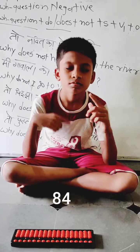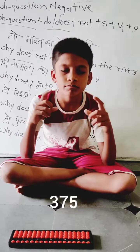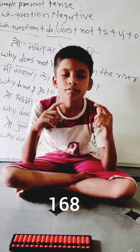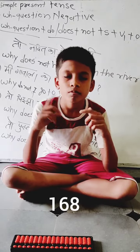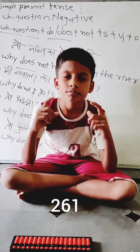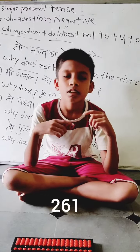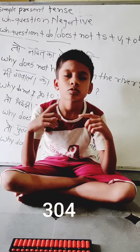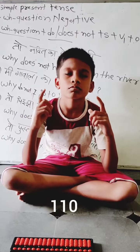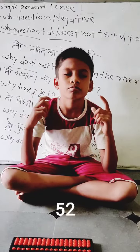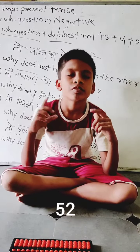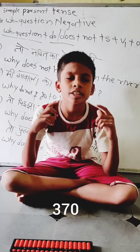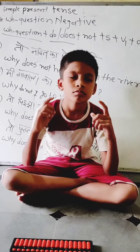21 x 4 = 84. 84 x 2 = 168. 87 x 3 = 261. Correct. 76 x 4 = 304. Correct. 22 x 5 = 110. Correct. 26 x 2 = 52. Correct. 74 x 5 = 370. Very good. Correct. Perfect.